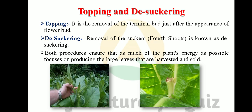Topping is the removal of the terminal bud just after the appearance of the flower bud. Desuckering is the removal of suckers — especially lateral shoots. This procedure ensures that as much of the plant's energy as possible is focused on producing the large leaves that are harvested and sold, which is economically beneficial for the farmer. In the photograph, the farmer is topping the flower buds.